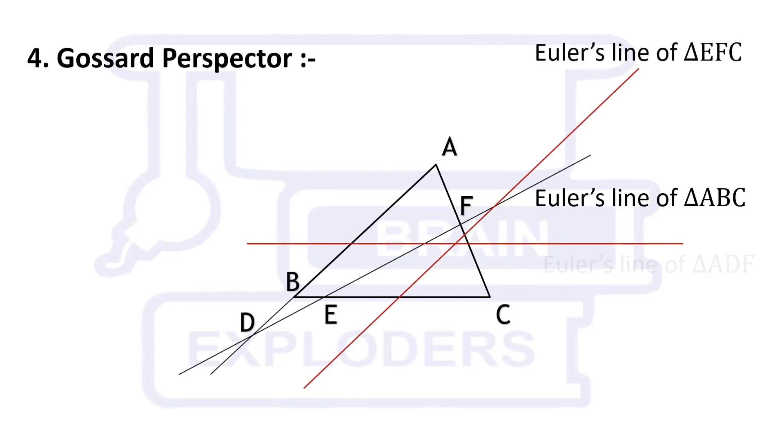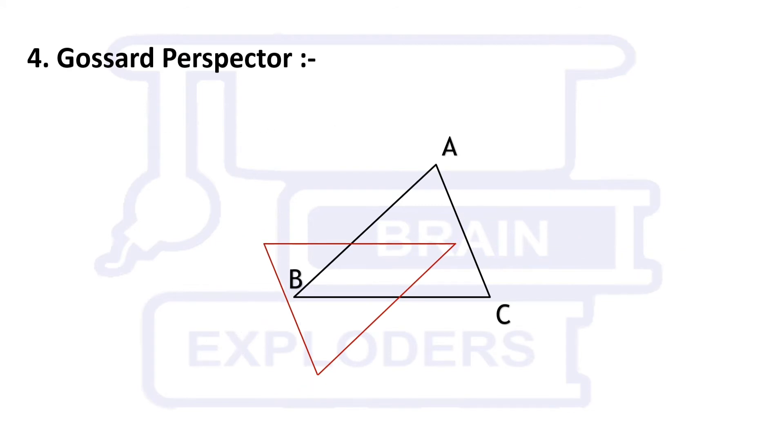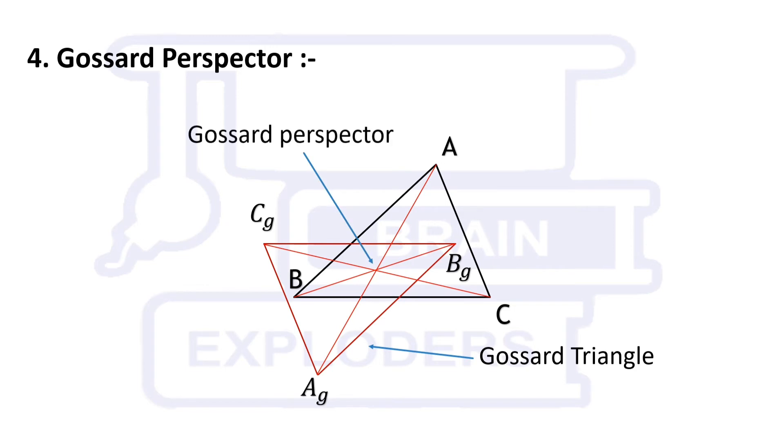Now draw the Euler's line of triangle DBE, ADF, and EFC. Triangle AGBGCG formed by these lines is called Gossard Triangle. Lines AAG, BBG, and CCG are concurrent and the point of concurrence is called Gossard Perspector.